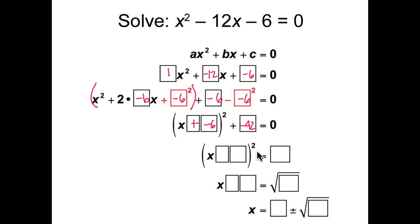We can simplify this equation by moving the negative 42 from the left side of the equation to the right. So we get x plus negative 6 quantity squared equals positive 42.